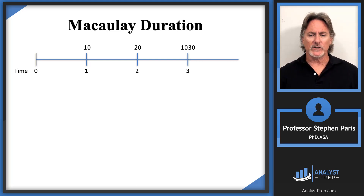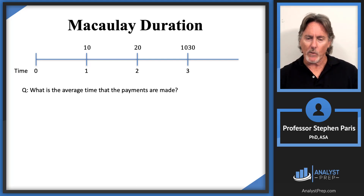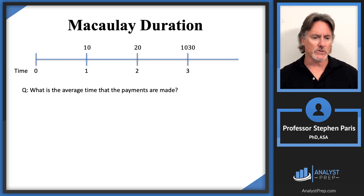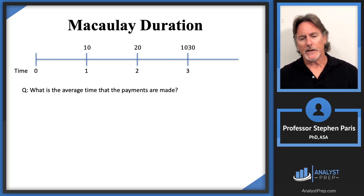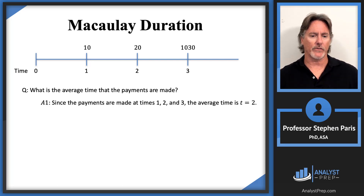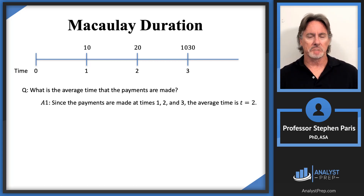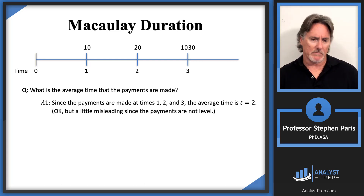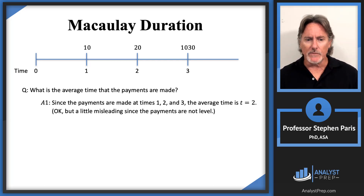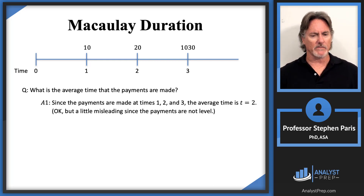The question is: what's the average time that the payments are made? You might say the payments are made at times 1, 2, and 3, so the average time would be time 2. I could see where you'd get that answer, but it's a little misleading because the payments are not the same — you're not making equal payments at times 1, 2, and 3.